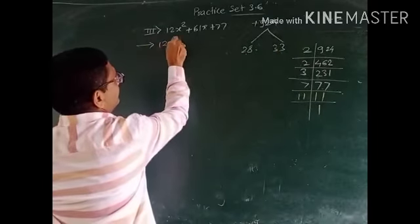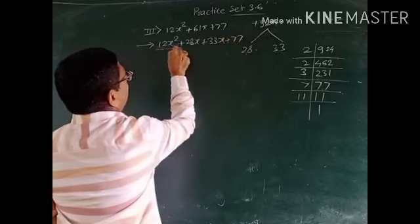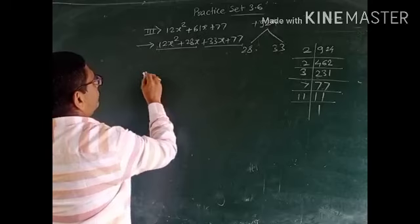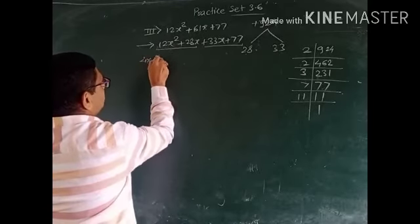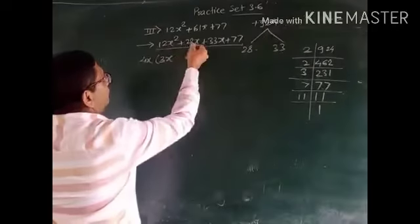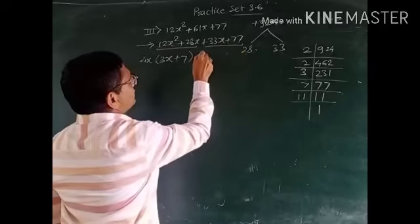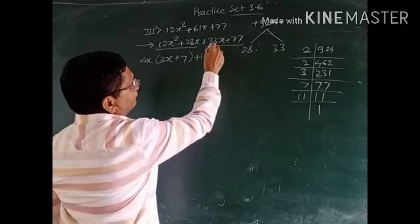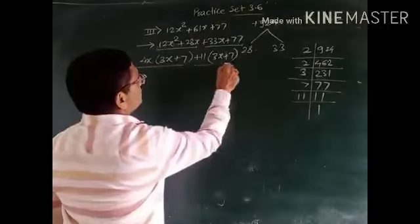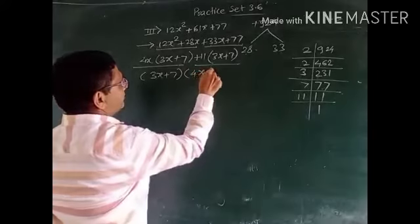Therefore, we rewrite as 12x² + 28x + 33x + 77. By grouping, we get two groups. In the first group, 4x is common: 4x(3x + 7), since 4x divides 12x² to get 3x and 4x divides 28x to get 7. In the second group, 11 is common: 11(3x + 7). Now (3x + 7) is the common factor, giving (3x + 7)(4x + 11). These are the factors of the given polynomial.